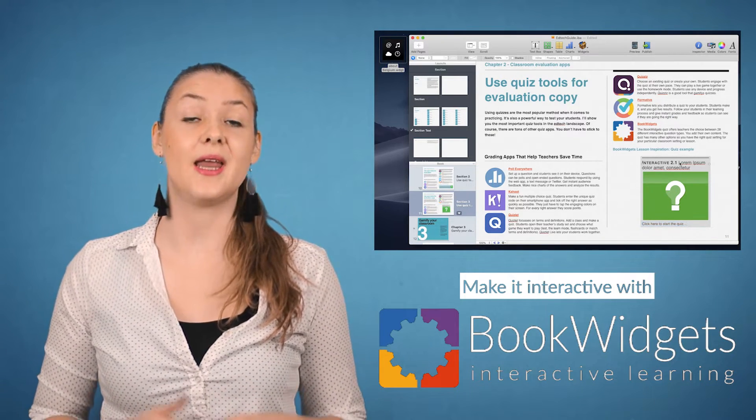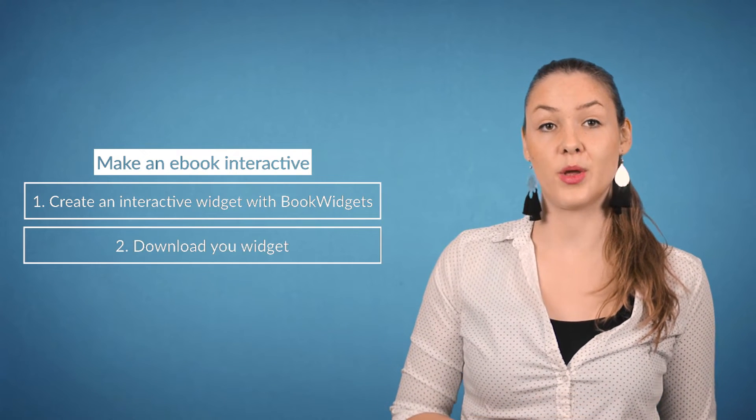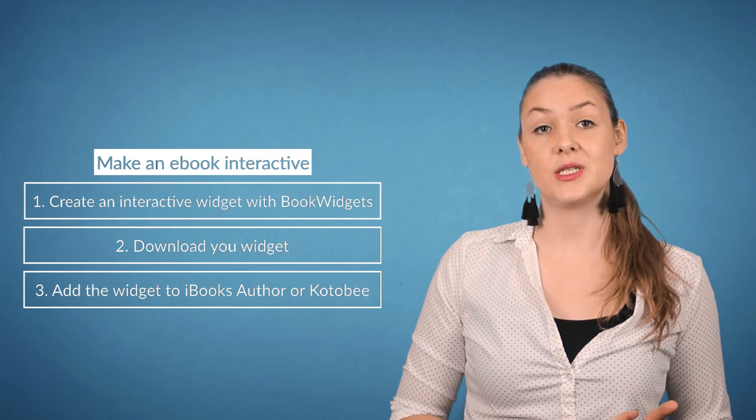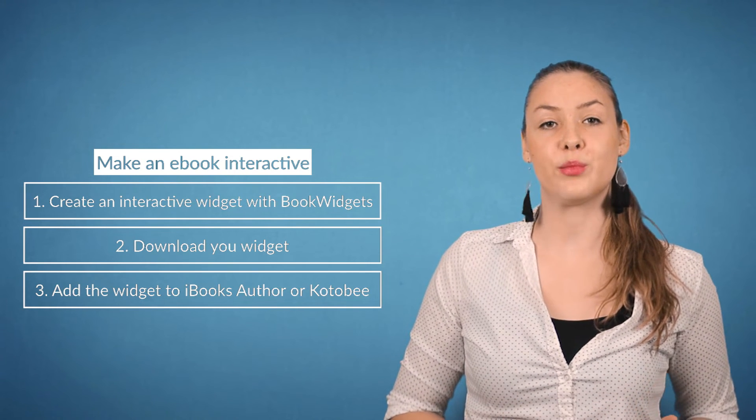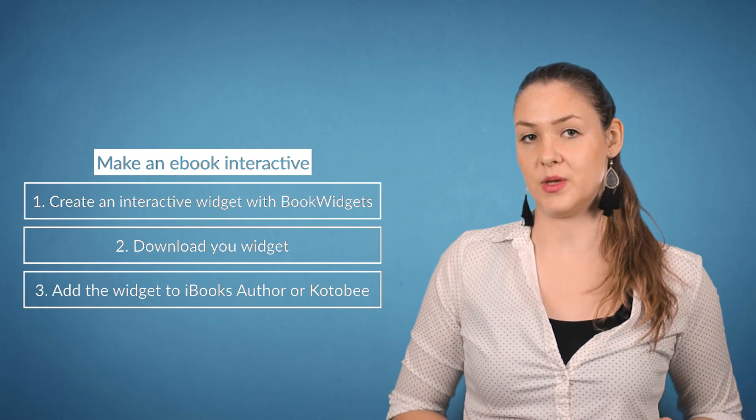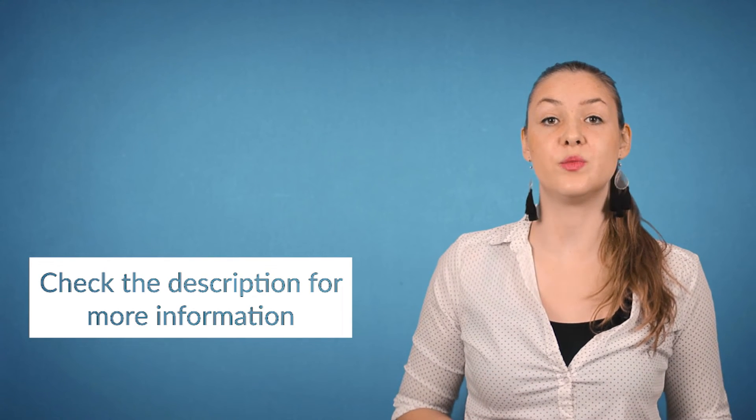So let me summarize this real quick. One: create an interactive widget on bookwidgets.com. Two: download your widget. And three: drag and drop the widget into iBooks Author or import a pop-up widget in Kotobee. That's it. I've put some extra info on how to use Book Widgets with iBooks Author below in the description.